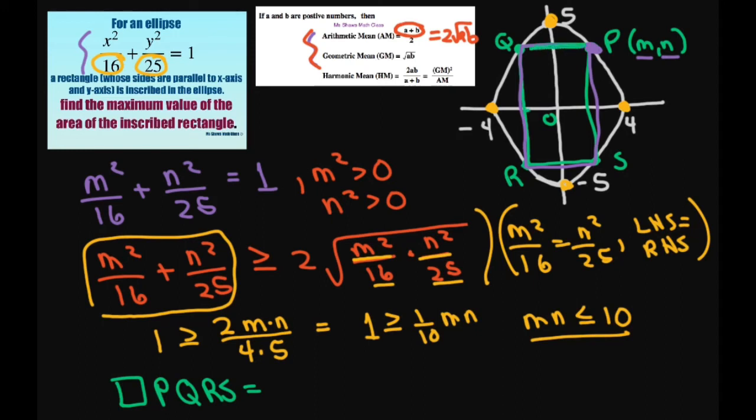So we have 2 of the x's. So that's going to be 2m times, and our y is the n, so that's going to be times 2, times 2n. And this is going to equal 4mn.